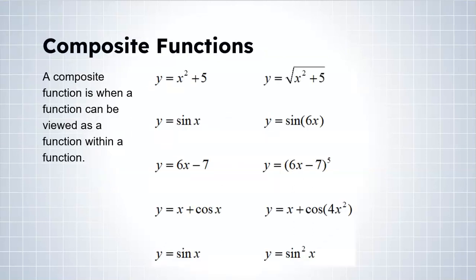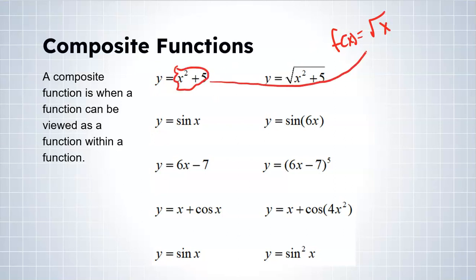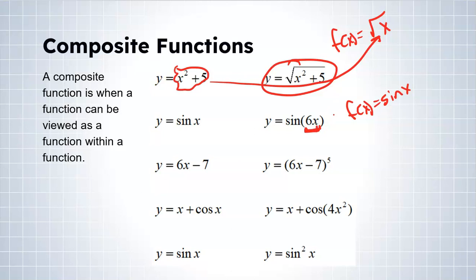Here are a couple of examples to understand what a composite function is versus what is not. In this first line, we have x squared plus five plugged into a square root — so the overall function is the square root of x, and I took x squared plus five and plugged it in. Here's another example: the overall function is sine of x, and I took 6x and plugged it in. In the third line, the overall function is x to the fifth, and I plugged in 6x minus seven, giving 6x minus seven to the fifth.